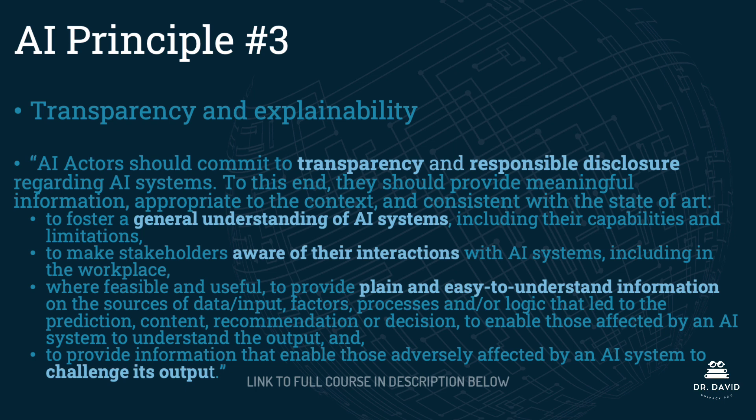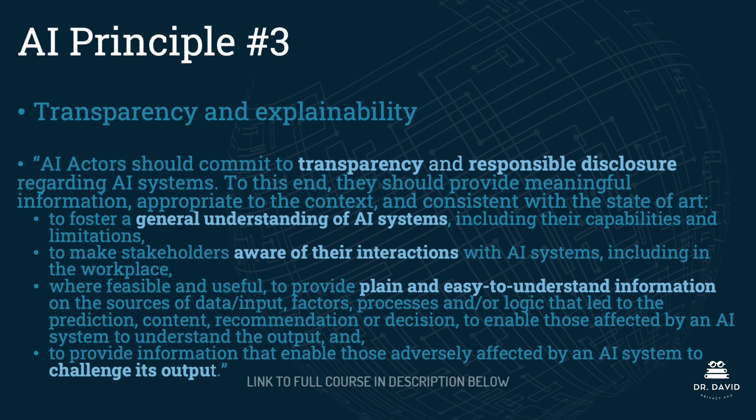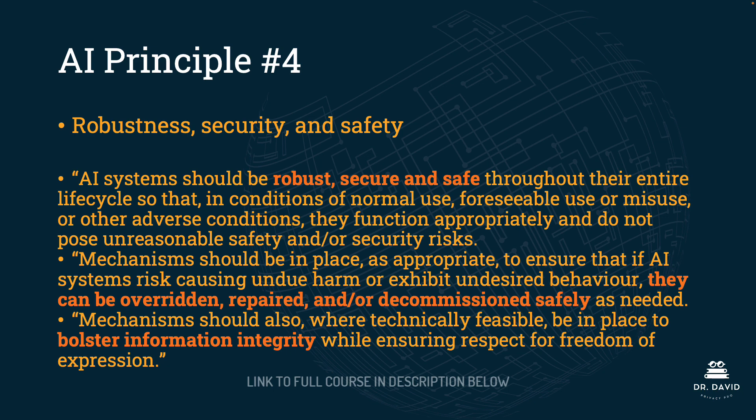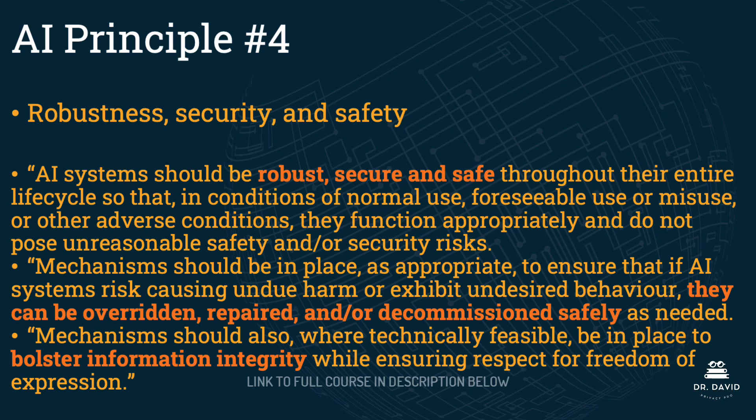AI principle number four is robustness, security, and safety. AI systems should be robust, secure, and safe throughout their entire lifecycle so that, in conditions of normal use, foreseeable use, misuse, or other adverse conditions, they function appropriately and do not pose unreasonable safety or security risks. Mechanisms should be in place to ensure that if AI systems risk causing undue harm or exhibit undesired behavior, they can be overridden, repaired, or decommissioned safely as needed. Mechanisms should also, where technically feasible, be in place to bolster information integrity while ensuring respect for freedom of expression.